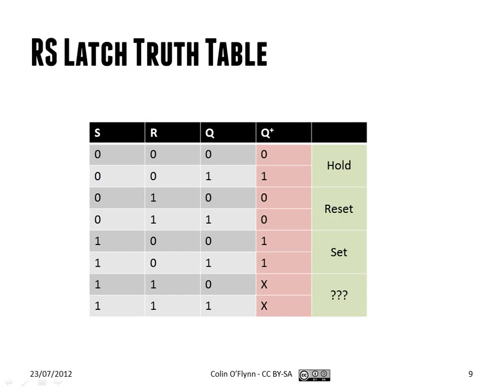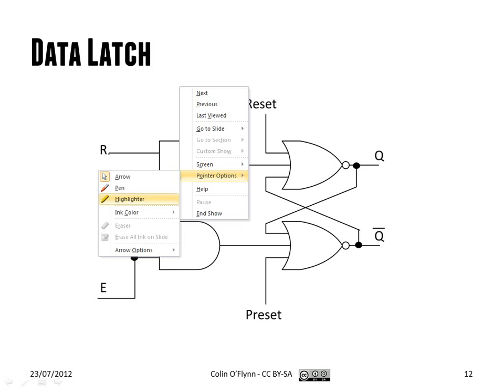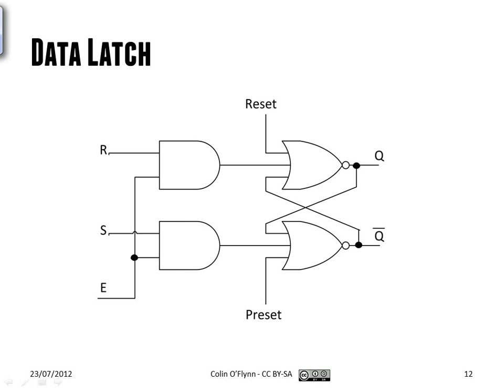So we have a simplified version we call a data latch. And how we do this is that we say we just want one input, D. And when D is one, the output goes to one. When D is zero, the output goes to zero. And we do that by connecting D to the set line, having an inverter here.